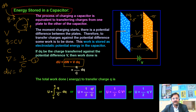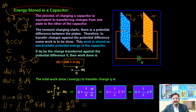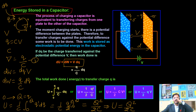The small amount of work done to give charge dQ to the conductor is dW = dQ × V = dQ × Q/C. To find the total work done, we integrate from 0 to Q: W = ∫₀^Q (Q/C) dQ = Q²/(2C). So the expression for energy stored in a capacitor is U = Q²/(2C).